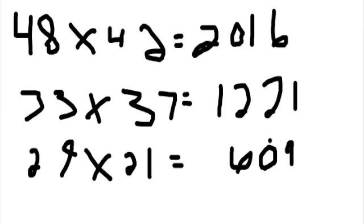Okay, now let me explain how I did this. The only way this will work is if the last two digits equal 10. For example, 48 times 42, 8 plus 2 equals 10. 33 times 37, 3 plus 7 equals 10. 29 times 21, 9 plus 1 equals 10.